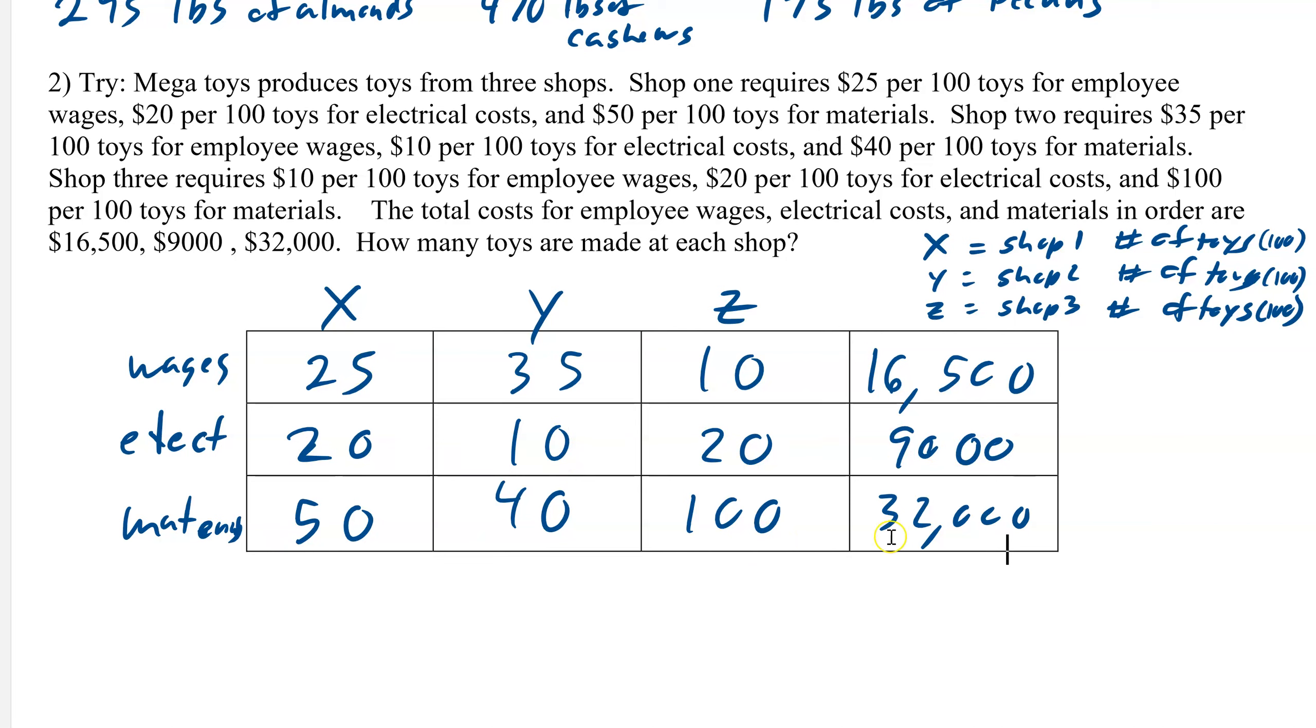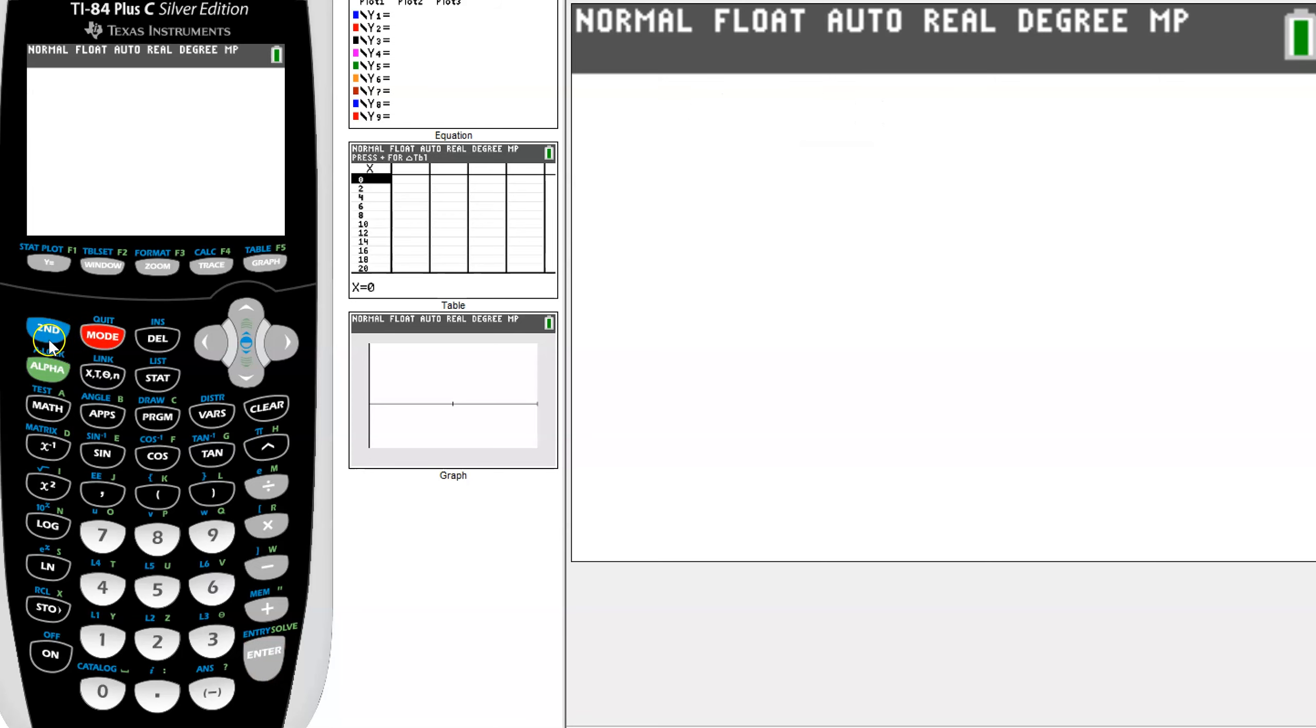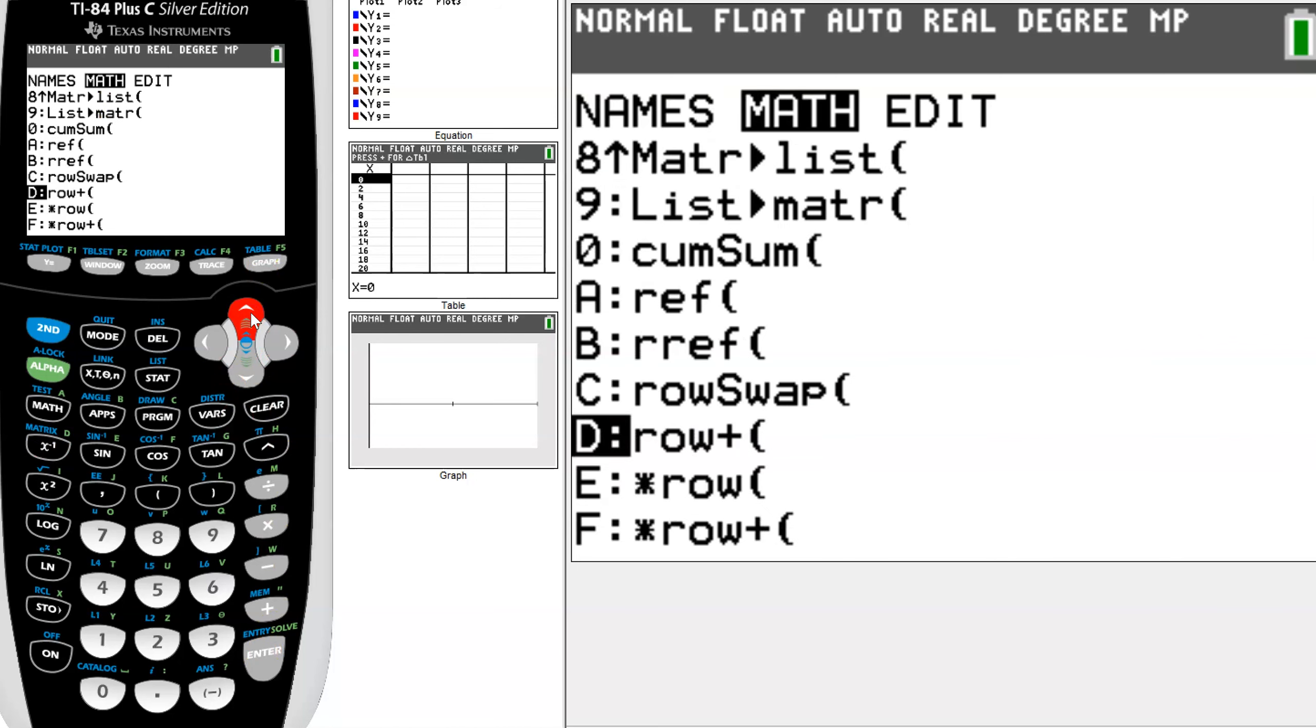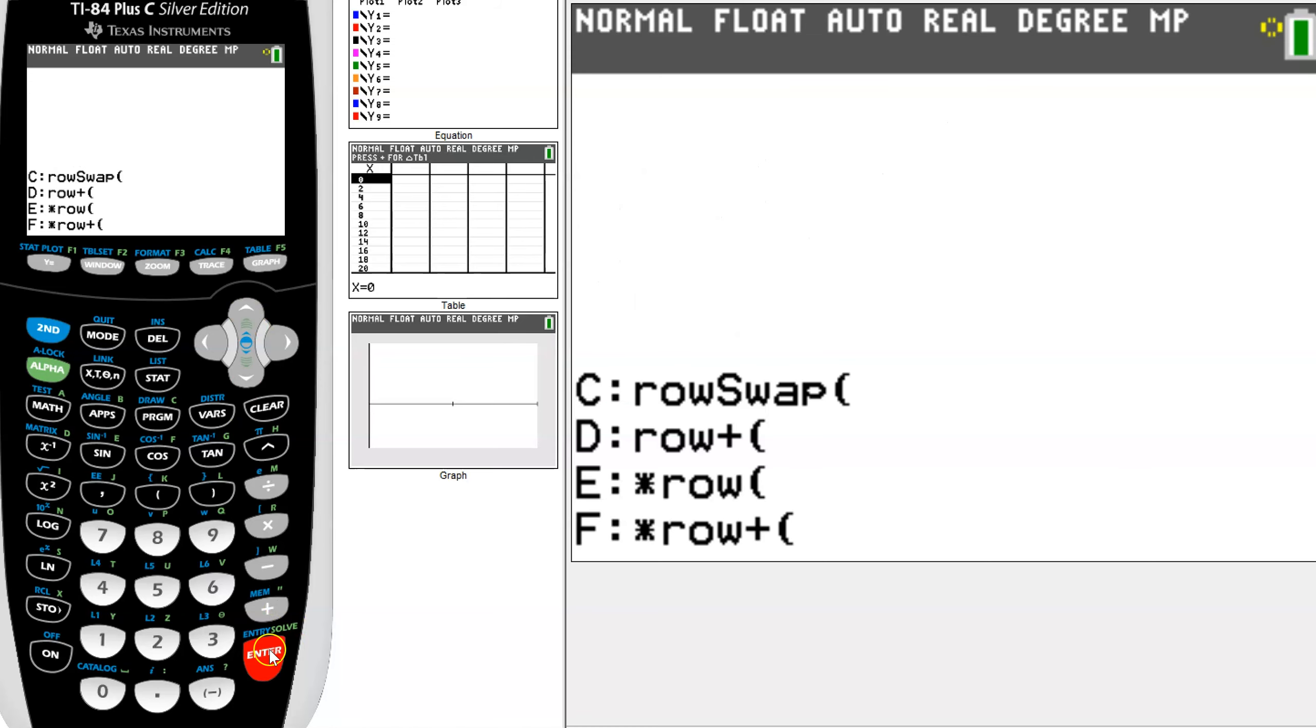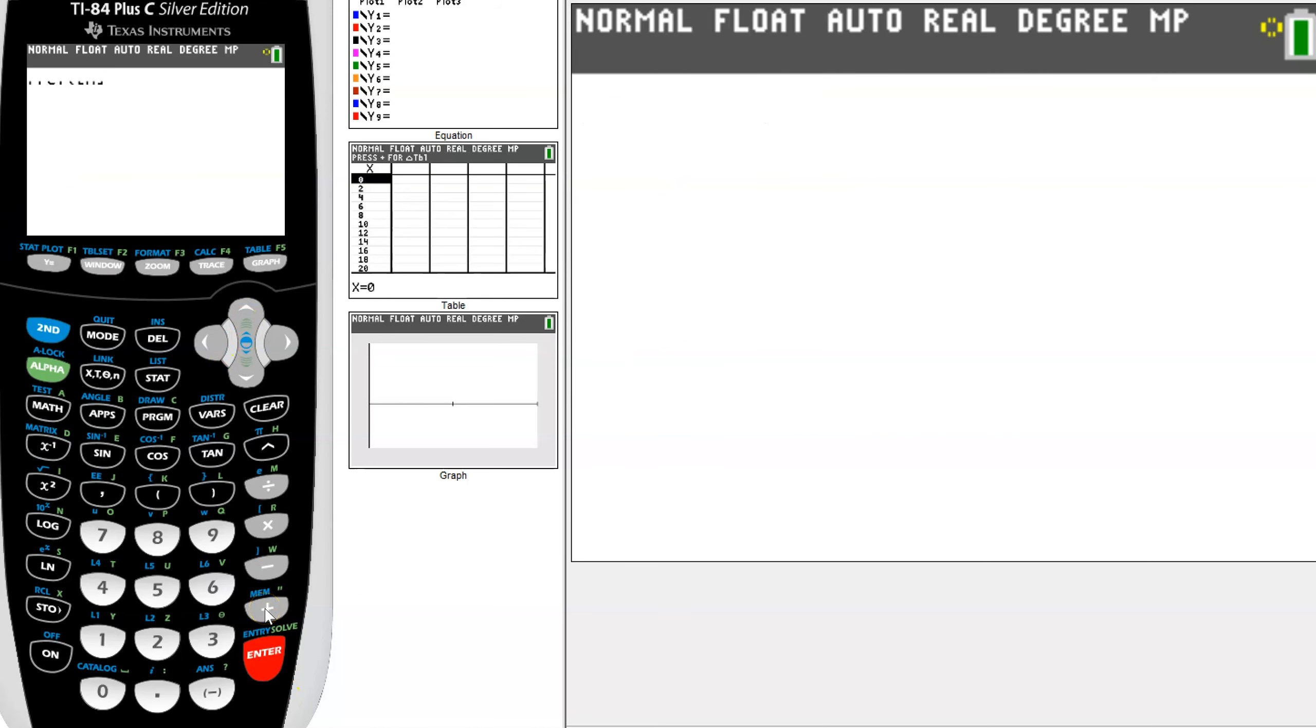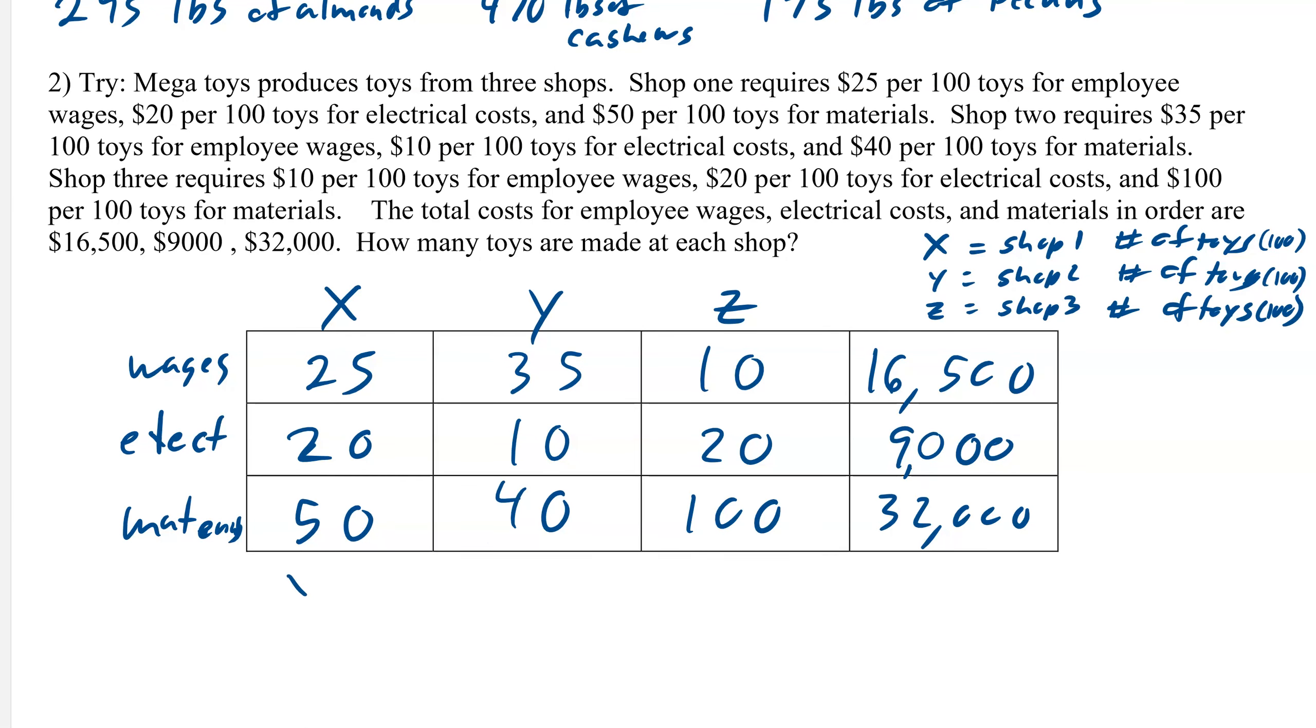If we plug this in our calculator, hit enter, it'll spit out all of our answers. I have it entered. Second quit, and then back to matrix. We're going to calculate letter B, second matrix, and then we'll select A, hit enter, and we get this. So it's 200, 300, 100. So X equals 200, 300, 100. But the thing is, each of these is 100 toys.